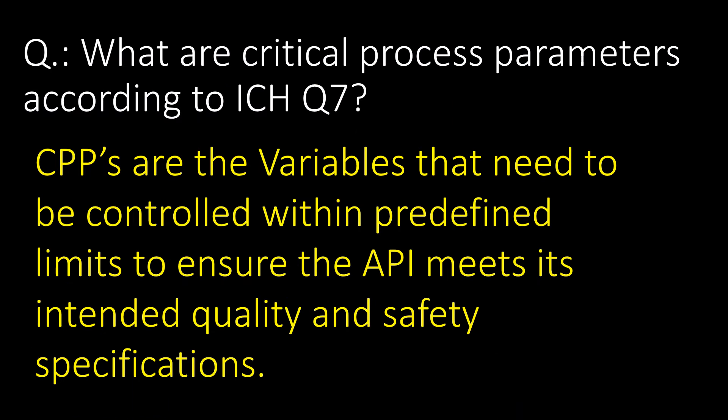What are the critical process parameters according to ICH Q7? According to ICH Q7, critical process parameters (CPPs) are the variables that need to be controlled within predefined limits to ensure that the APIs meet their intended quality and safety specifications.